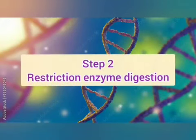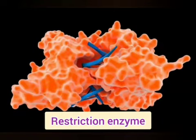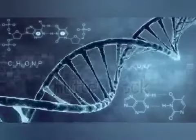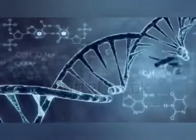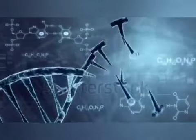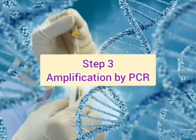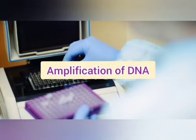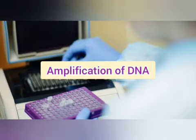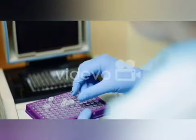Number 2: Restriction enzyme digestion. We use restriction enzymes as a molecular scissor to cut DNA at specific locations. Number 3: Amplification using PCR. The cut DNA fragments can be amplified by using PCR.